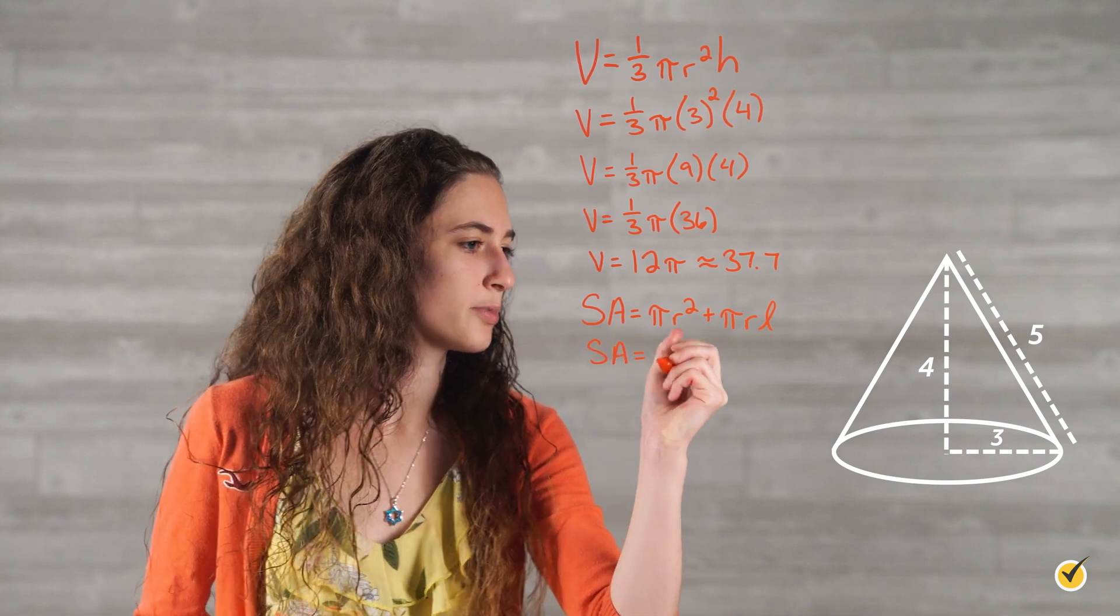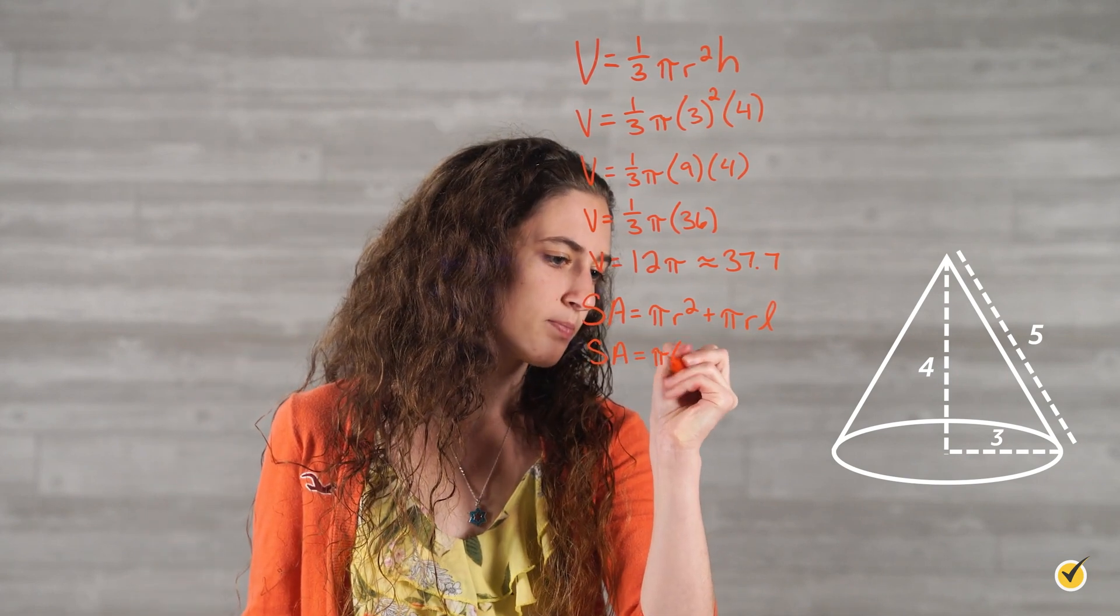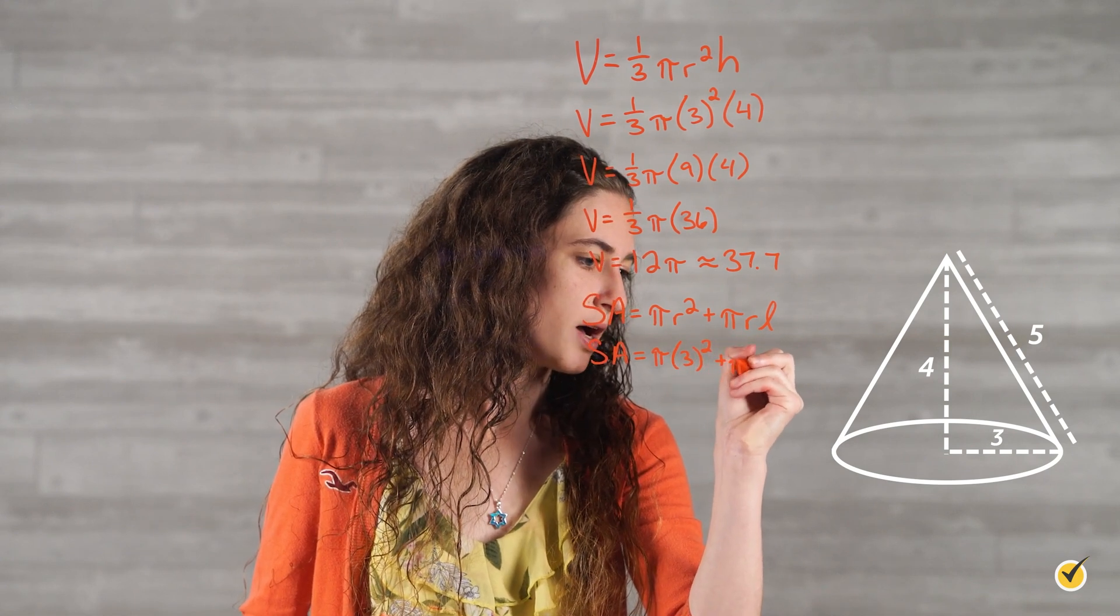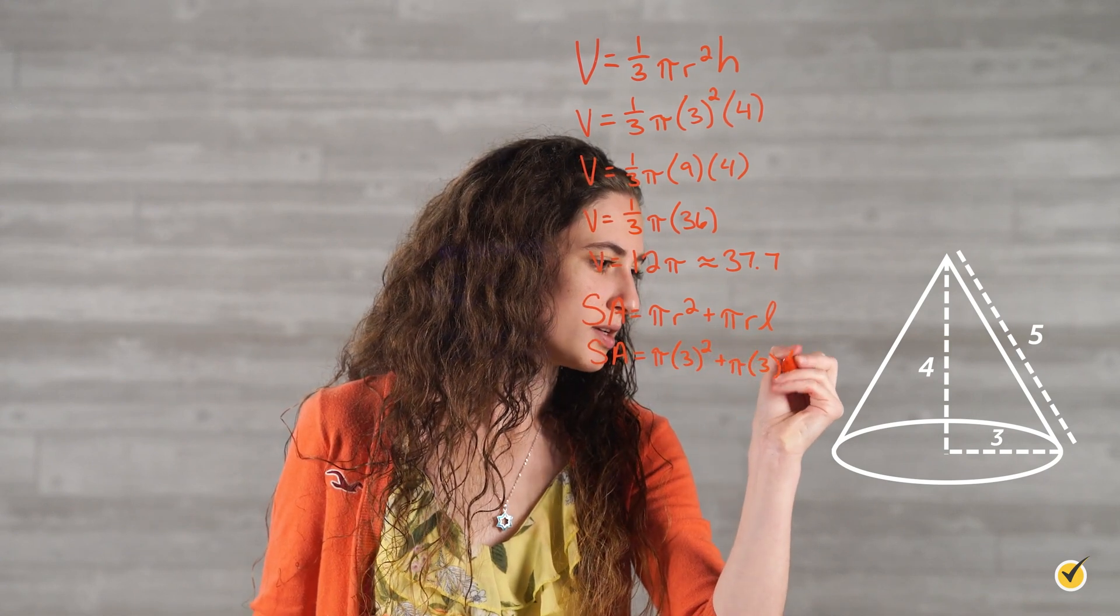Then, we'll substitute in the numbers for our variables: pi times 3 squared plus pi times 3 times 5.